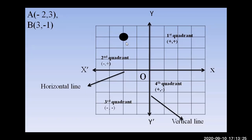So we place point A at (-2, 3). For point B (3, -1): the abscissa is plus so go three units to the right, and the ordinate is minus so go one unit down in the y-axis. That's how to plot the points. Now let's go to the math.